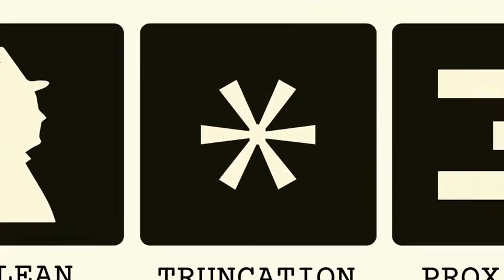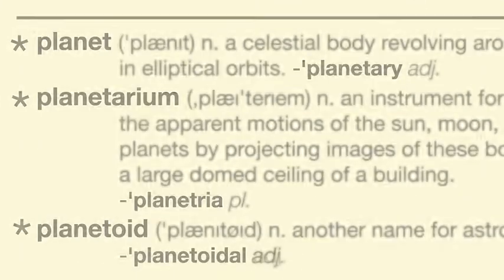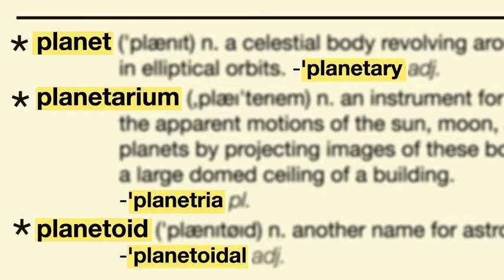Experiment with truncation. Use an asterisk in order to expand a search, and find results that will include all forms of the root or stem of a word.